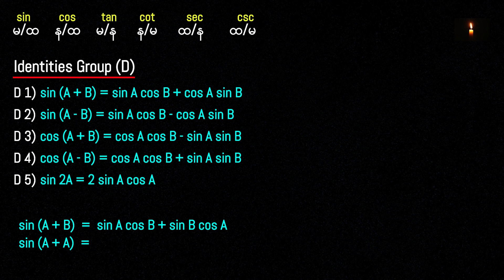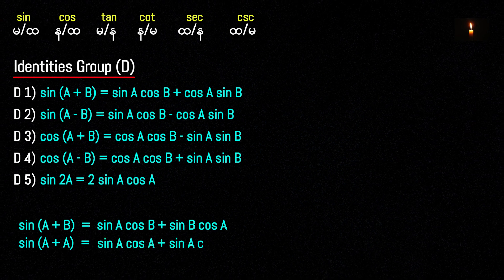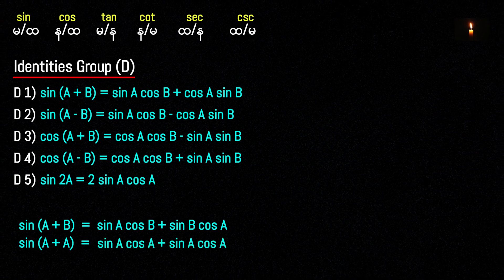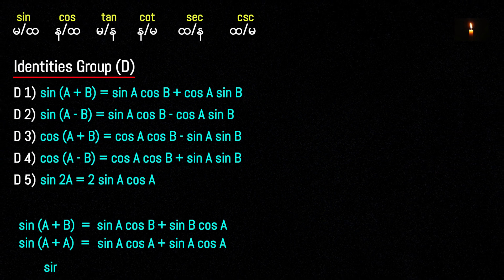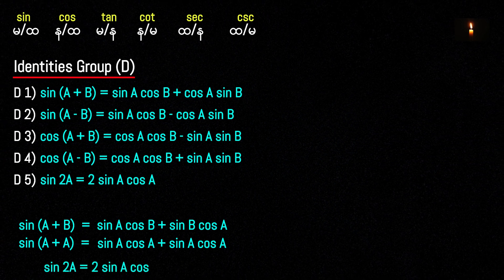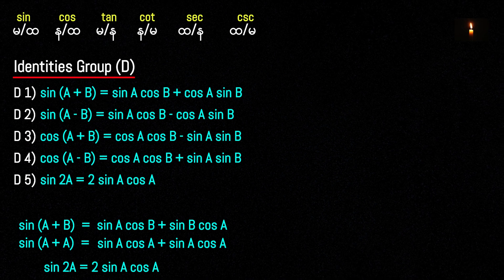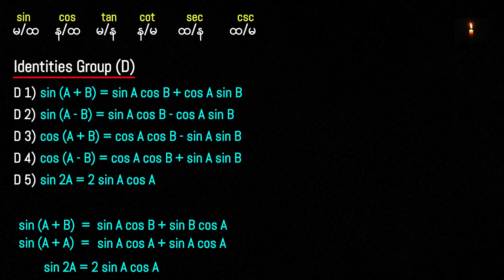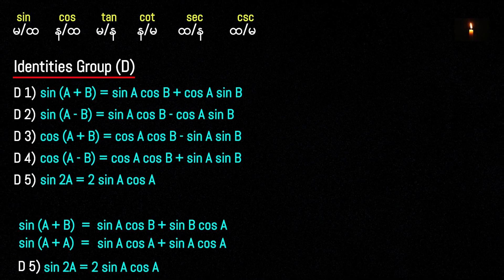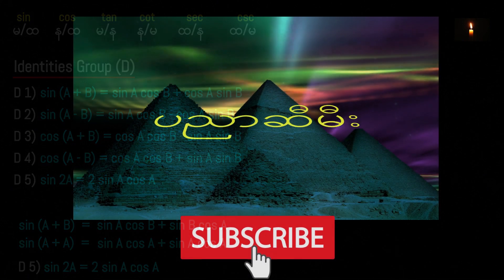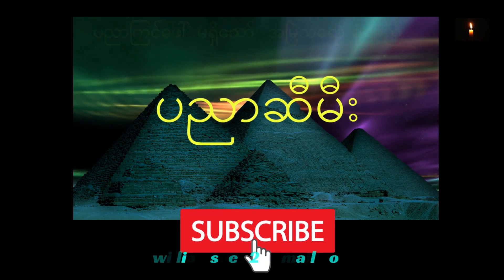Sin(A+A) — sin equals A plus sin equals A, which gives sin 2A equals 2 sin A cos A. So sin 2A equals 2 sin A cos A — this is identity D5. Okay, D video — now identity D2.